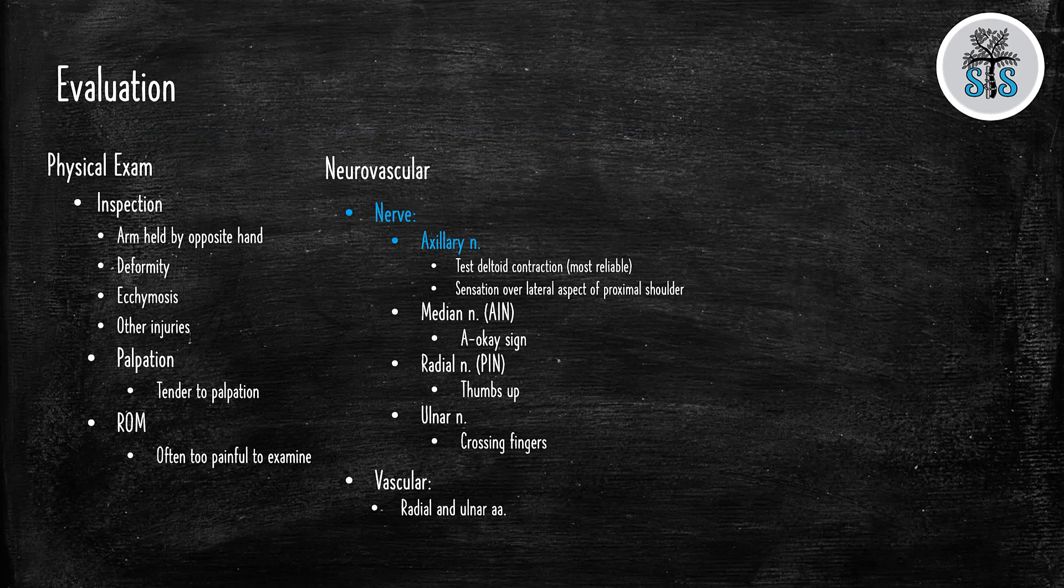Now, getting a good history is important, but next you want to get a very good physical exam. Start with inspection of the affected arm. Look for how it's being held. Is there any deformities? Is there ecchymosis? Are there other injuries? Especially if this is going to be a higher energy mechanism, you want to look at the clavicle. Look at the surrounding structures. Make sure other extremities aren't affected.